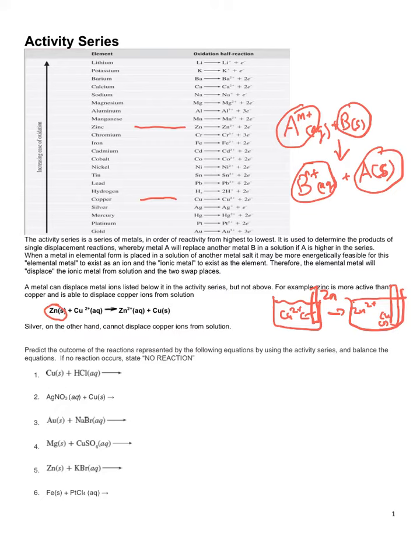This can happen because zinc is above copper. Notice how the reactions are written — they're all written as oxidations. Remember, loss of electrons is oxidation. So it's a question of how much does a metal want to become an ion.